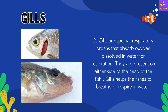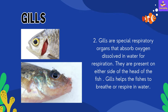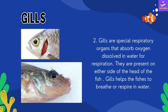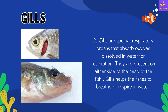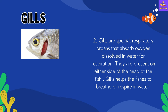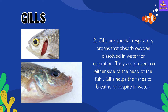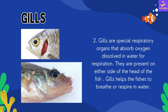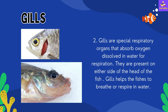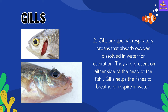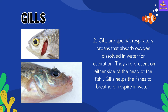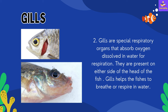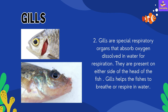Number 2: Gills. Gills are special respiratory organs in fishes that absorb oxygen dissolved in water for respiration. They are present on either side of the head of the fish. Gills help the fishes to breathe or respire in water. So, in place of lungs, fishes have gills.